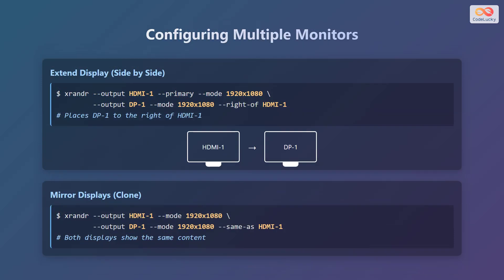Configuring multiple monitors is where xrandr really shines. To extend the display across multiple monitors, use the following command. First, set the primary display with xrandr --output, for example HDMI-1, and specify its mode. Then for the second display like DP1, set its mode and use the --right-of option to position it to the right of the primary display. If you prefer to mirror the displays so they show the same content, use the --same-as option. This will clone the primary display onto the secondary display.